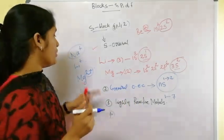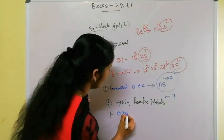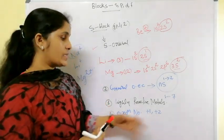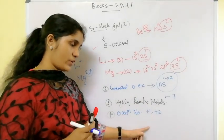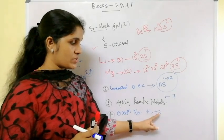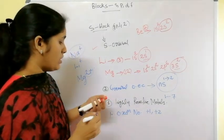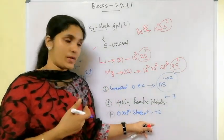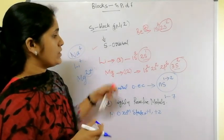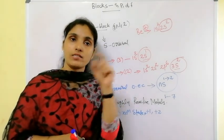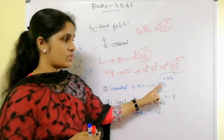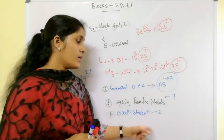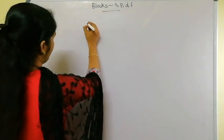The fourth property is oxidation state. We know that sodium is written as Na⁺ and lithium as Li⁺, while magnesium is Mg²⁺. These indicate oxidation states. For s-block elements, the oxidation state is either +1 or +2. More precisely, alkali metals (group 1) have an oxidation state of +1, and alkaline earth metals (group 2) have an oxidation state of +2.